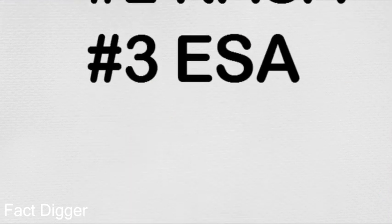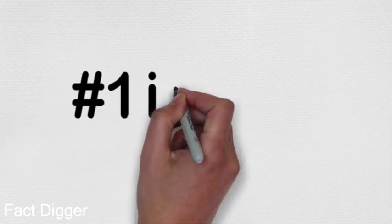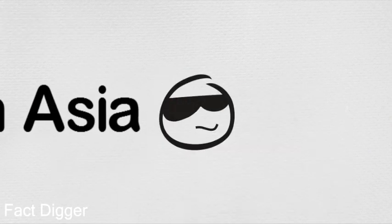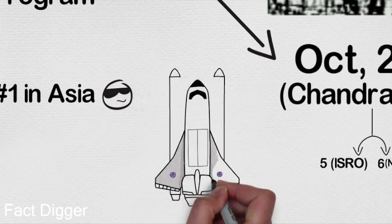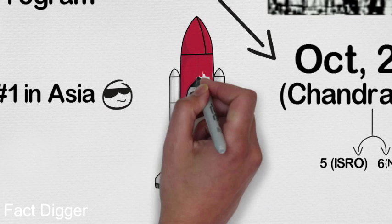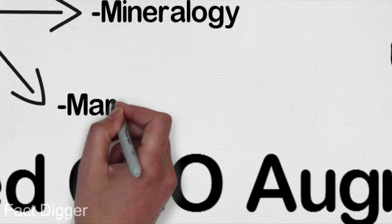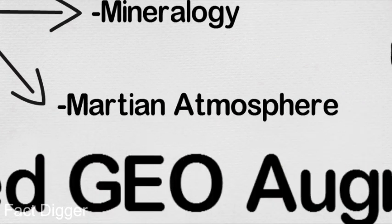After the Soviet space program, NASA, and ESA, ISRO became the fourth space agency in the world and the first space agency of Asia to reach Mars. The main objective of the mission was to develop the required technologies for designing and planning future interplanetary missions. The secondary goal was to explore the morphology, mineralogy, and Martian atmosphere using indigenous scientific instruments.